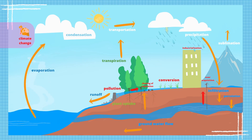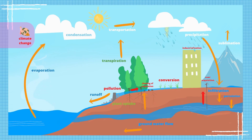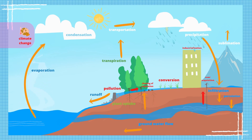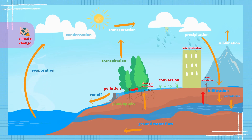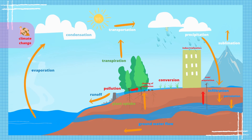In addition to this, because of industrialization, ground that is usually porous is covered with impervious materials that cause water to directly run off without being absorbed. This causes an increase in surface runoff and a decrease in infiltration, percolation, and groundwater flow. All these come together to create an imbalance in the cycle that causes longer dry seasons, heavier rainfall, and water scarcity.